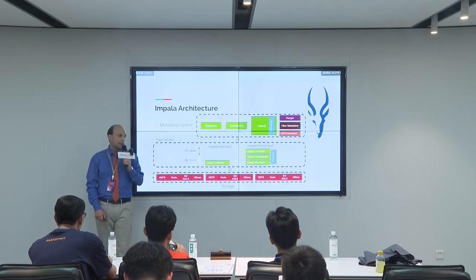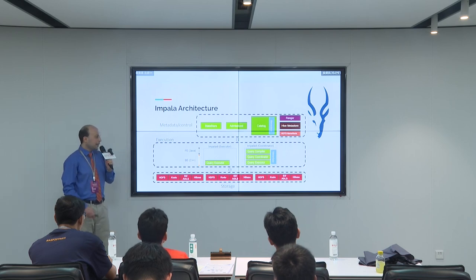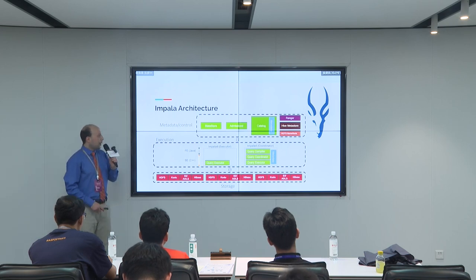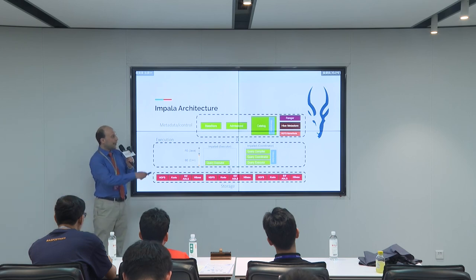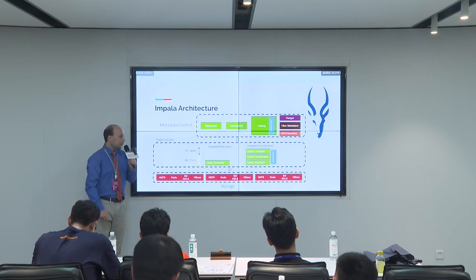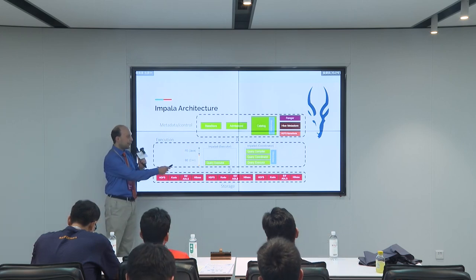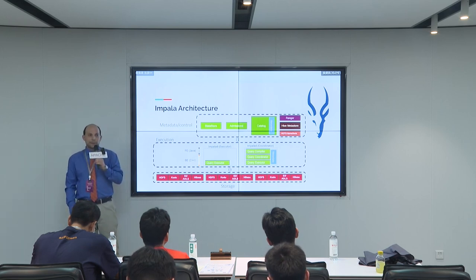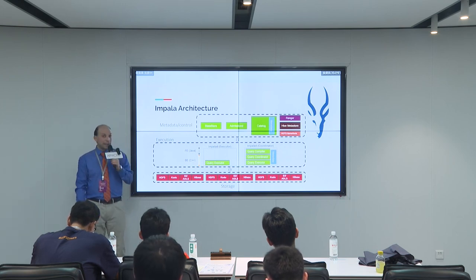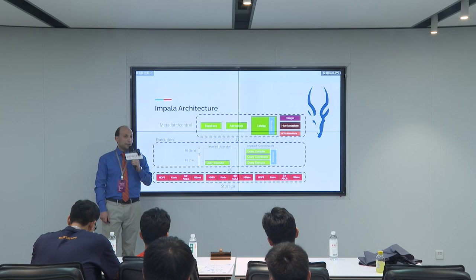This is the overview of the architecture of Apache Impala. At the bottom, you can see the storage layer. The green parts are internal parts of Impala; the others are external services that we rely on. The storage is down there, and above it you've got the execution layer, where you've got two kinds of Impala roles: the executor and the coordinator. The coordinator is responsible for handling client requests, compiling and optimizing queries.